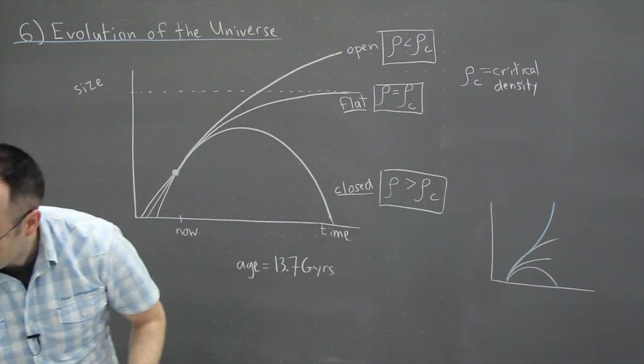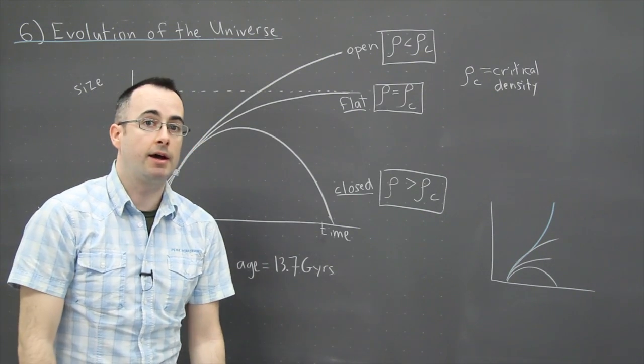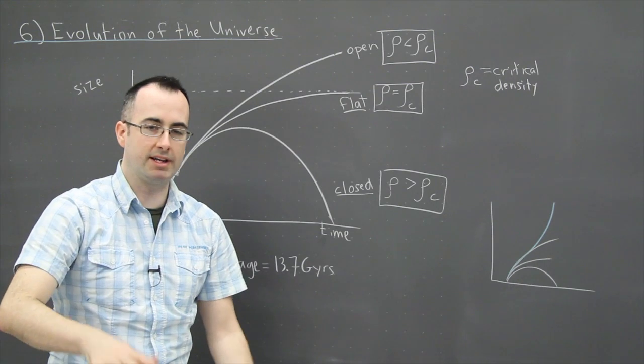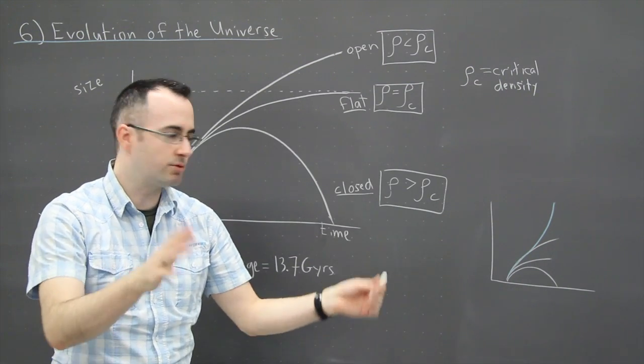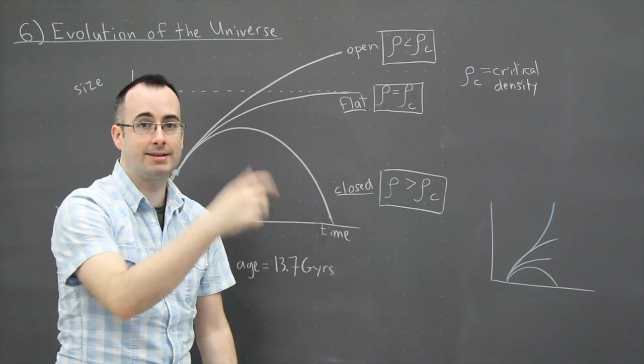But what's really cool then is there were two different teams of cosmologists. And what they were doing, they were separately, so they weren't really exactly working together, not in the strictest sense. But what they were doing is they were looking at supernovas in galaxies.